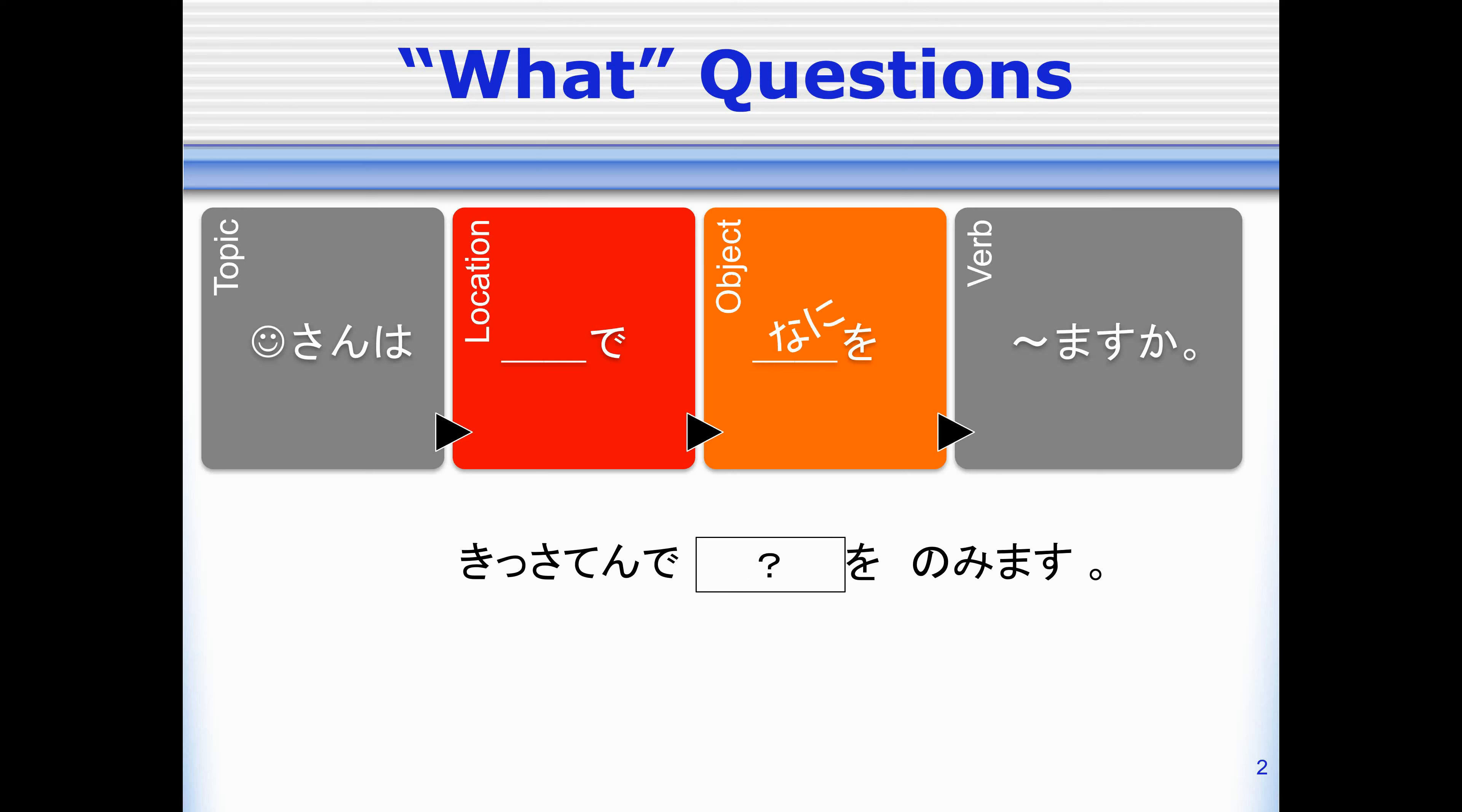So I want to ask the question with the word nani. I'll ask like topic wa, location de, nani wo, and then the verb. And to make it a question, we always need the particle ka.